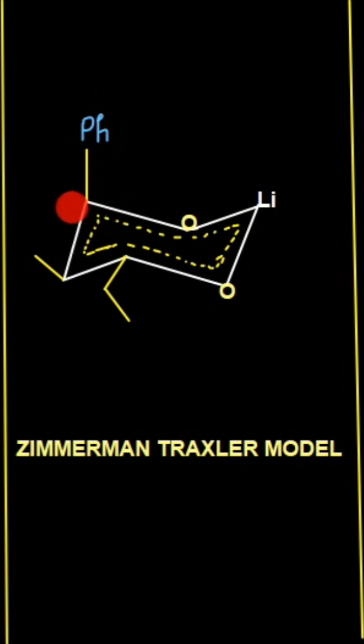This phenyl group and this methyl group are the two substituents from the lithium enolate. This ethyl group was present on the second carbonyl compound.